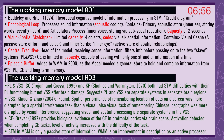Evidence for the phonological loop and visuospatial sketchpad: SC from Trojani and Grossi, and KF from Shallice and Warrington, both had short-term memory difficulties with the phonological loop, but not the visuospatial sketchpad, after brain damage — suggesting the phonological loop and visuospatial sketchpad are separate systems in separate brain regions. Visuospatial sketchpad: Klauer and Zhao found spatial performance of remembering locations of dots on a screen was more disrupted by a spatial interference task than a visual one. Also, the visual task of remembering Chinese ideograms was more disrupted by visual interference, suggesting visual and spatial processing are separate systems within the visuospatial sketchpad.